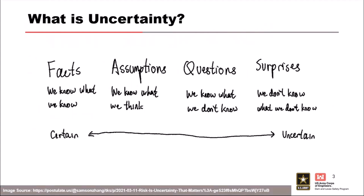When we talk about uncertainty, we think of it as a spectrum. There are some things we know, like facts, and there are some things that take us completely by surprise — unknown unknowns — and everything in between.